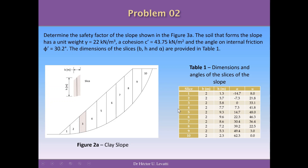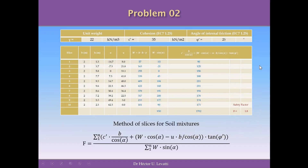The next exercise is different because we have water pressure as information, as you can see here. It is basically the same sort of slope with the same number of slices, but now we need to determine the safety factor including water pressure. The soil has a unit weight of 22 kN per cubic meter, a cohesion of 43.75 kN per square meter, and an angle of internal friction phi equal to 30.2 degrees. Since this is not a pure clay but a mixture with sand, the conditions are drained. The dimensions of the slices and the water pressure for every slice are provided in the table.